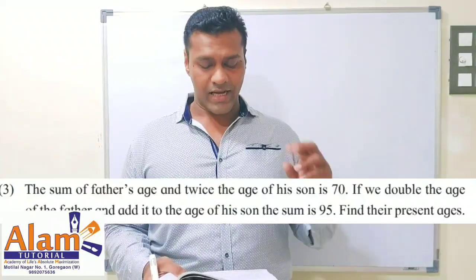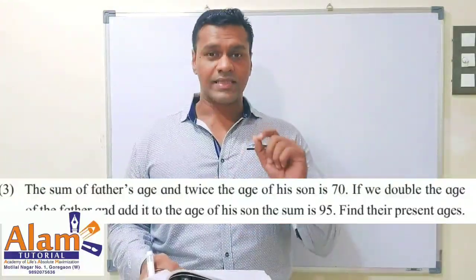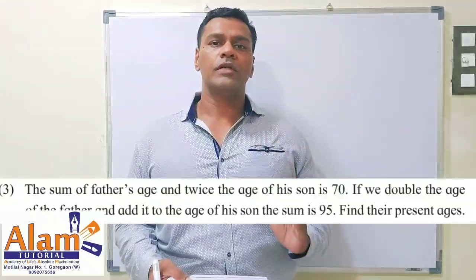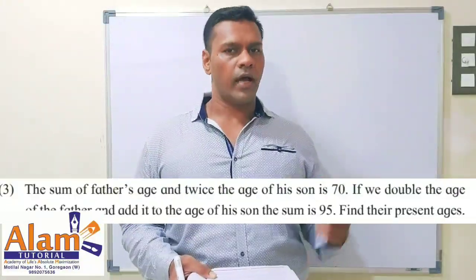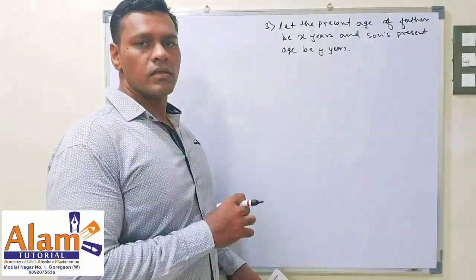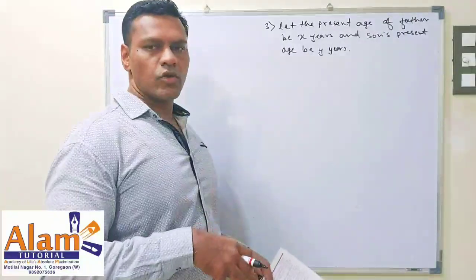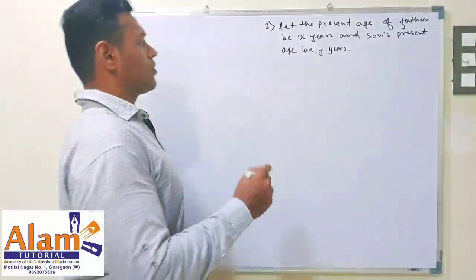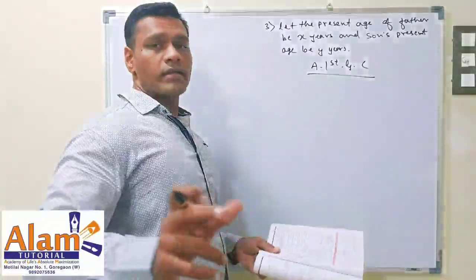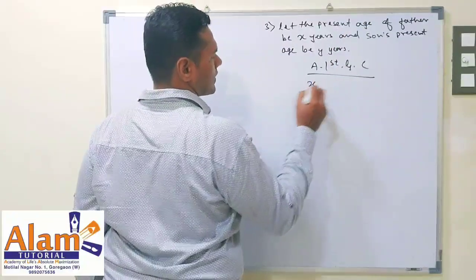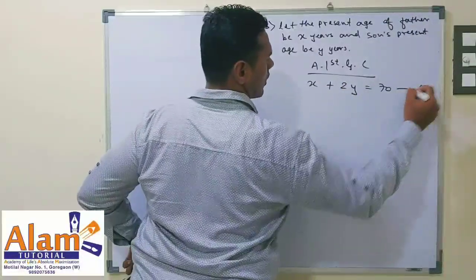Coming to the third sum: The sum of the father's age and twice the age of his son is 70. If we double the age of the father and add the age of his son, the sum is 95. Find their present ages. Let the present age of the father be x years and the son's present age be y years. According to the first condition, x plus 2y is equal to 70 — this is equation 1.